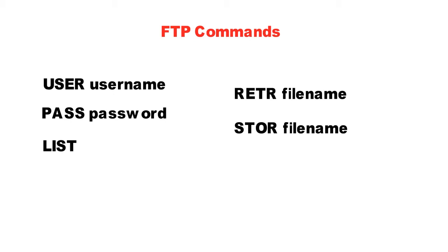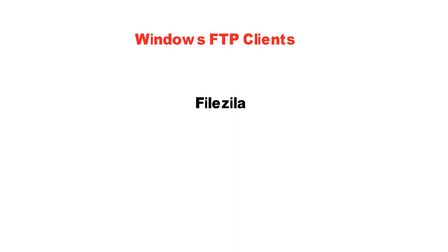Suppose there are three directories in the remote file system — A, B, and C — and the current directory is B. If the client wants to read a file from directory C, then the client can change the directory to C and then read or write a file in that directory.